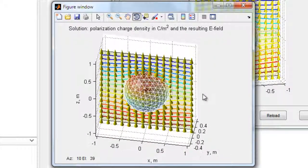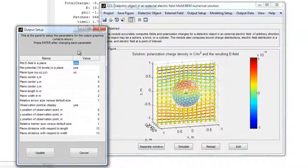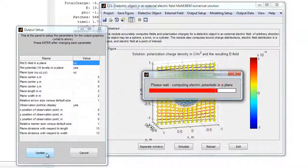If desired, the output data format can be changed to display only the electric potential and the polarization surface charges. In this case, the object becomes non-transparent, as shown in this display here.